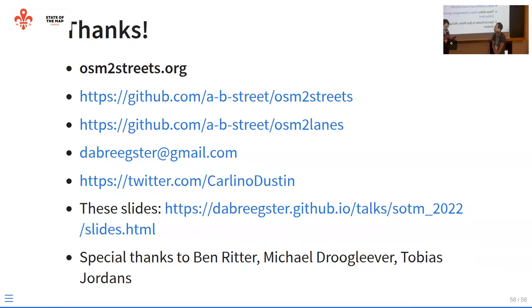Question: what changes to the OSM data model would solve the issues you encountered? If I had to vote for one change: instead of just string key-values as tags, how about JSON? If we had JSON, you could have one center line or one object for a road, and then you could say here are the lanes left and right — a list where each item has string key-values and free-form tagging. That one thing would solve many problems. So more hierarchical tagging rather than comma-separated lists.